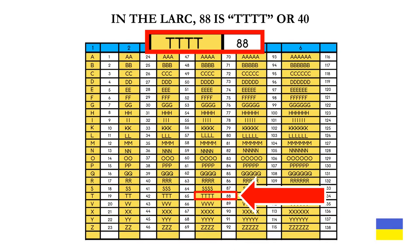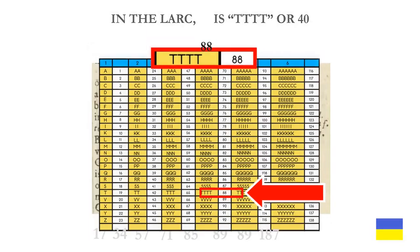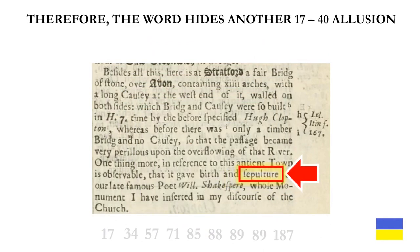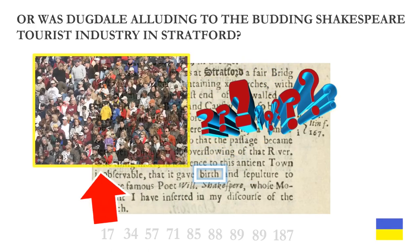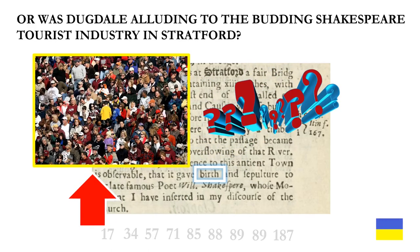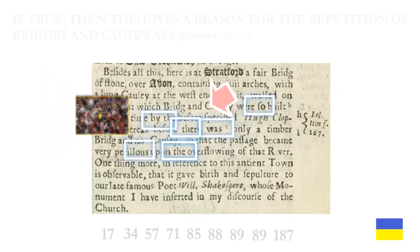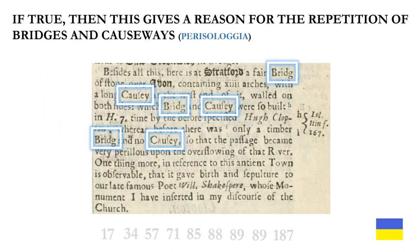In the Latin alphabet repeated count, 88 is T-T-T-T, or 4-T. Therefore, the word hides another 1740 allusion. But how can a town give birth to a person? Or was Dugdale alluding to the budding Shakespeare tourist industry in Stratford? If true, then this gives a reason for the repetition of bridges and causeways in the example of Parisologia.